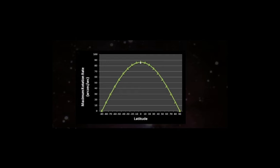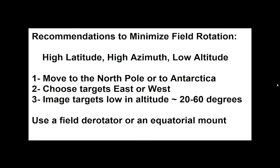As we move to either of the two poles, we are doing much better. Recommendations to minimize field rotation in an Alt-Az mount: high latitude, high azimuth, low altitude. So you have three options initially — you can either move to the North Pole or to Antarctica and eliminate field rotation outright.